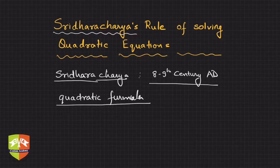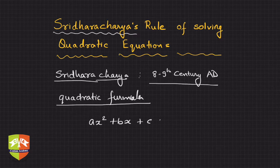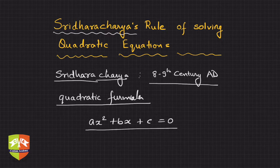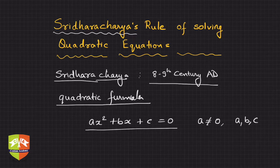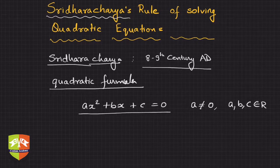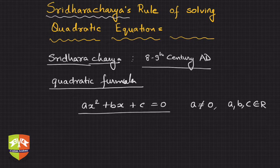Let us say we have an equation ax² + bx + c = 0. This is a quadratic equation, and time and again we have learned that 'a' cannot be equal to 0, and a, b, c all belong to the set of real numbers.